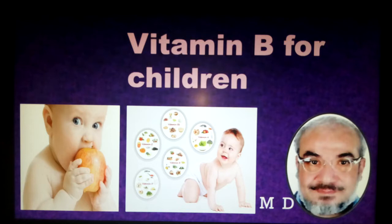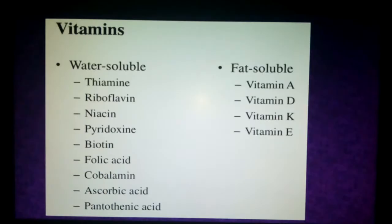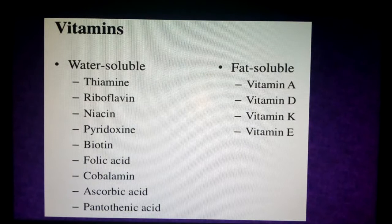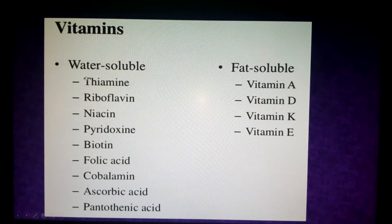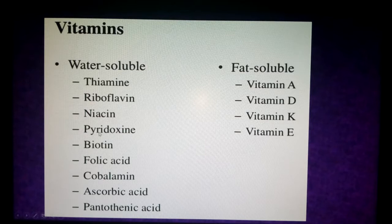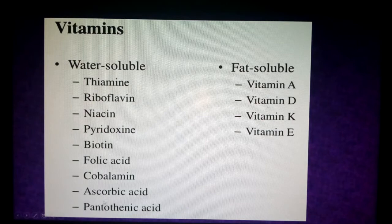Hello everyone, I will discuss vitamin B for children. We will start with a simple classification of vitamins. There are two main categories: fat-soluble vitamins, which make up the letters of the word 'DEKA' — vitamin A, K, D, and E — which need a fatty medium for absorption; and water-soluble vitamins, which we will discuss today: thiamine (B1), riboflavin (B2), niacin (B3), pyridoxine (B6), biotin, folic acid, cobalamin, ascorbic acid (vitamin C), and pantothenic acid.